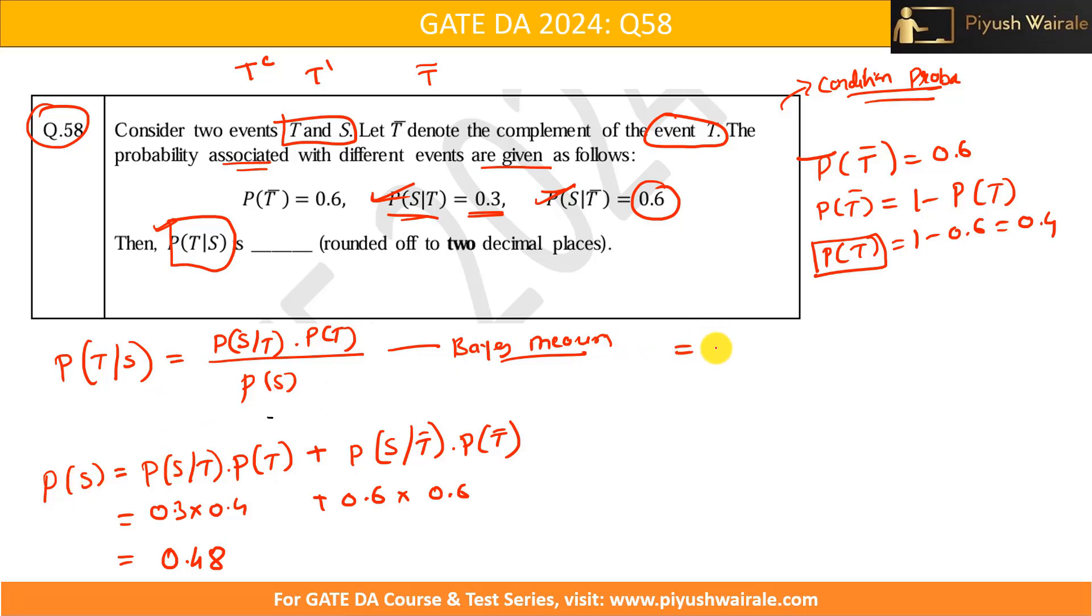So, probability of S is 0.48. Now, just put the values here. What we are going to get? That is 0.3 into 0.4 divided by 0.48. So, that is basically what? 0.25. So, 0.25 is the answer for this particular question, okay? Simple question, nothing in it.